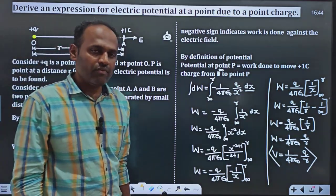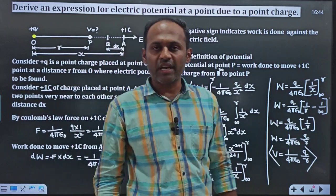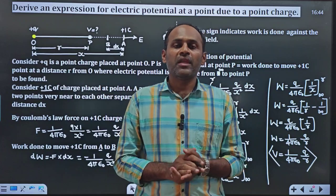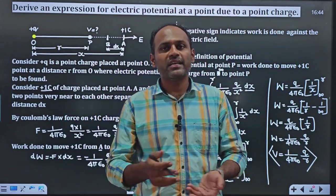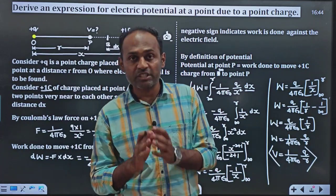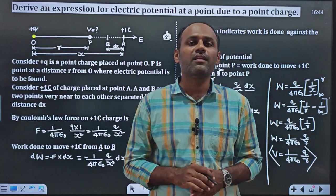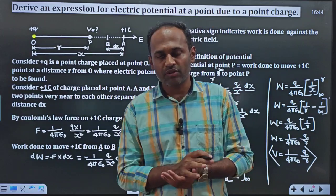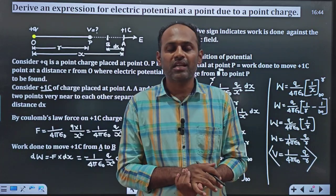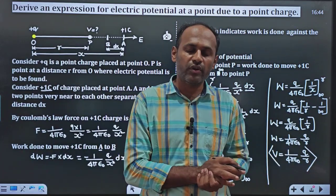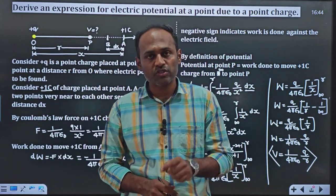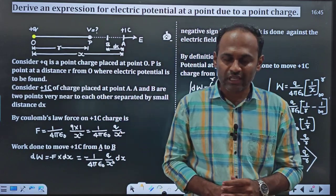This is how we derive the expression of electric potential at point P due to the point charge. Hope you have understood the derivation. We will see the next chapter's derivation in the next video. Dear students, if you like the content of this channel, please don't forget to subscribe the channel and share the video with your friends, juniors as well as mates. Thank you so much for watching and supporting the channel. Please keep watching.